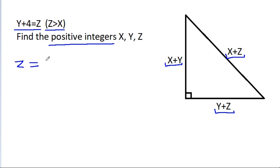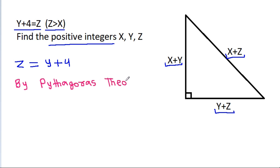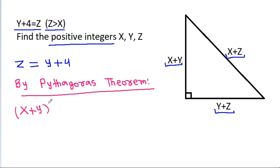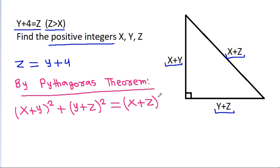So g is equal to y plus 4. And by Pythagoras theorem, (x plus y) squared plus (y plus g) squared is equal to (x plus g) squared.